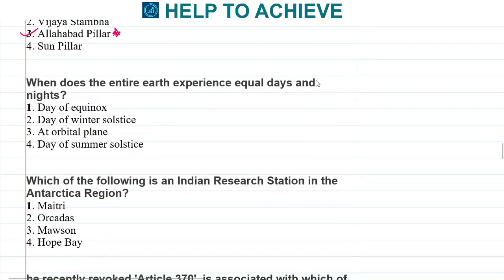When does the entire Earth experience equal days and nights? The correct answer is the day of equinox. On this day, day is equal to night. Whereas solstice is when the days are maximum or minimum. During summer, days are maximum; during winter solstice, days are minimum. When days are equal, that day is known as the day of equinox.